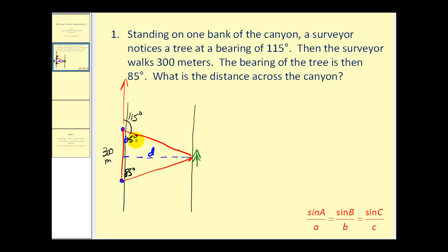Next, in the red triangle, we know the sum of these three angles must equal 180 degrees. These two have a sum of 150 degrees. So this angle here would be 30 degrees.